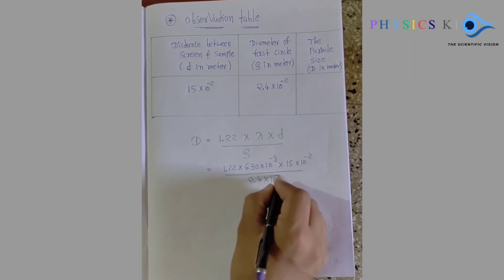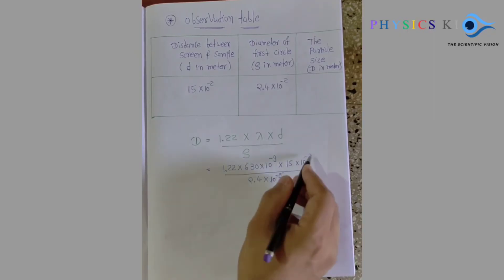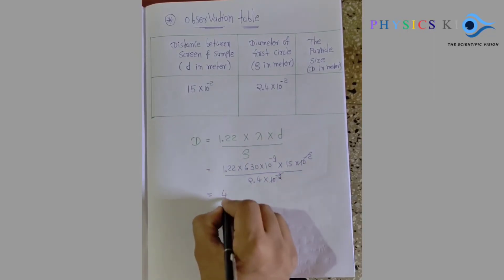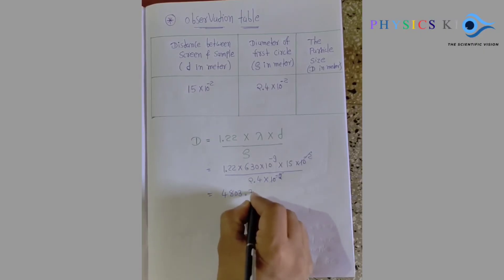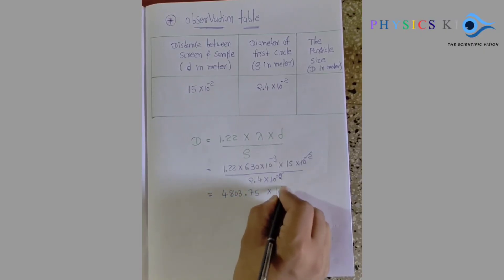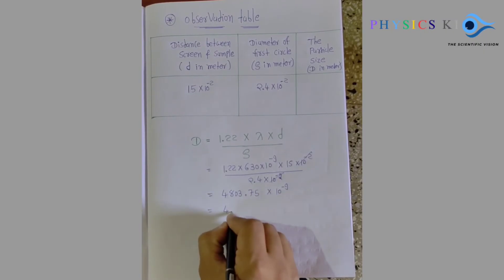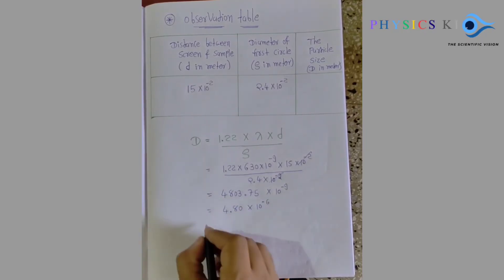And we already measured the diameter of first circle: 2.4 into 10 to the power minus 2. Using the calculator, simply I calculate the value and my answer is 4.8 into 10 to the power minus 6.